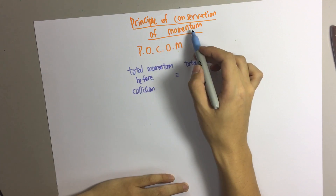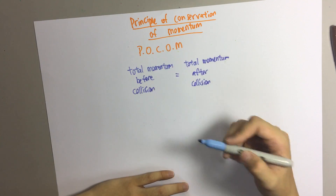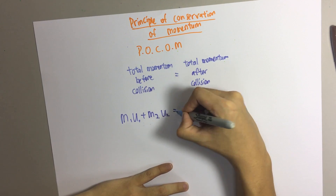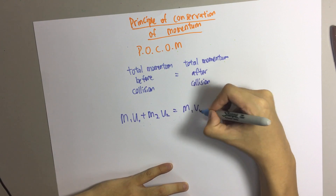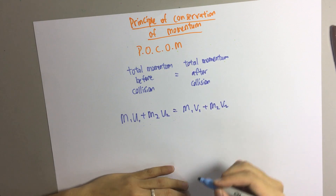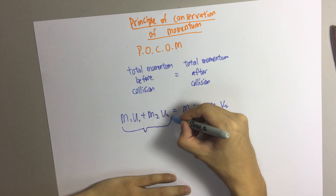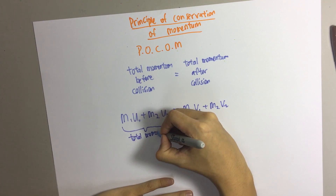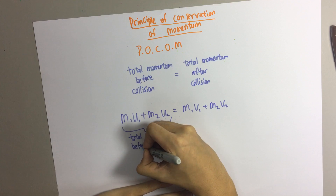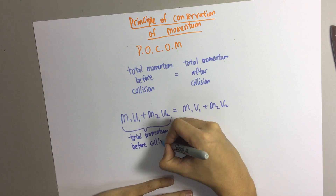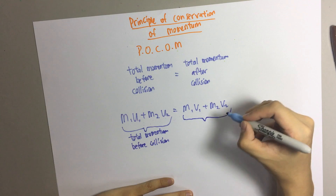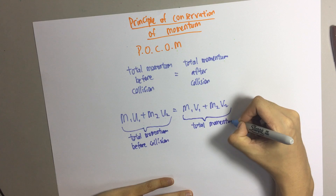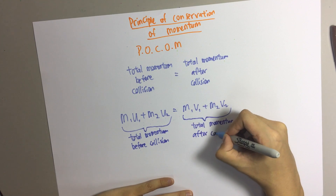For the principle of conservation of momentum, or POCOM, you have the formula: m1·u1 + m2·u2 = m1·v1 + m2·v2. The front part is the total momentum before collision, and the back part is the total momentum after collision.